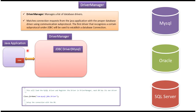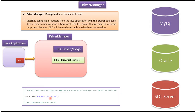Suppose from a Java application if you want to connect to an Oracle database, then what we have to do is register the Oracle-specific JDBC driver in the Driver Manager. To register the Oracle-specific JDBC driver in Driver Manager, in Class.forName we have to give the Oracle-specific driver information, so that the Oracle-specific driver will be loaded and registered in the Driver Manager.